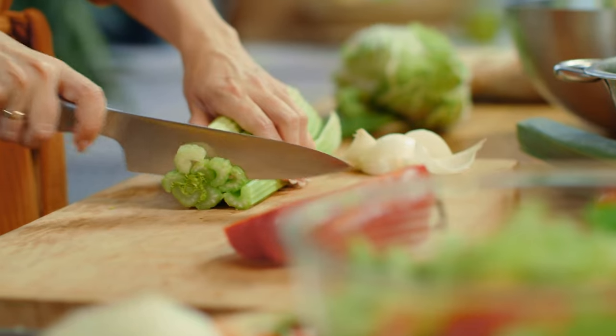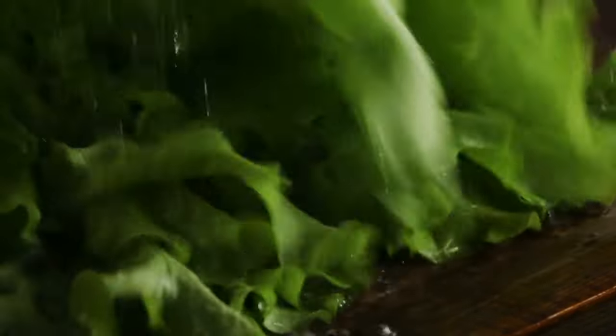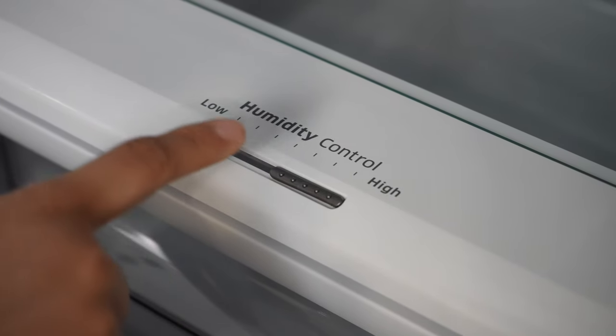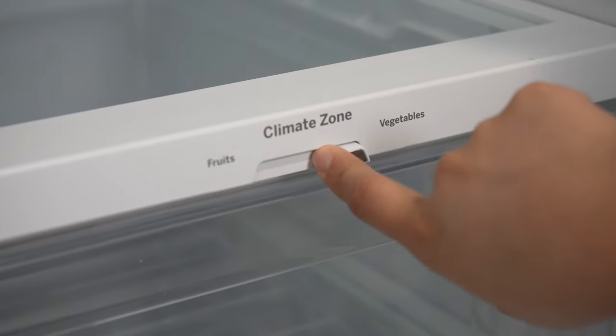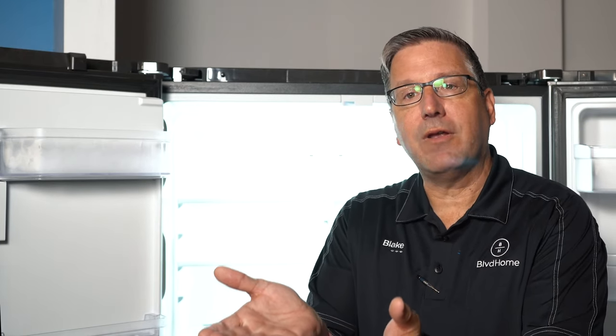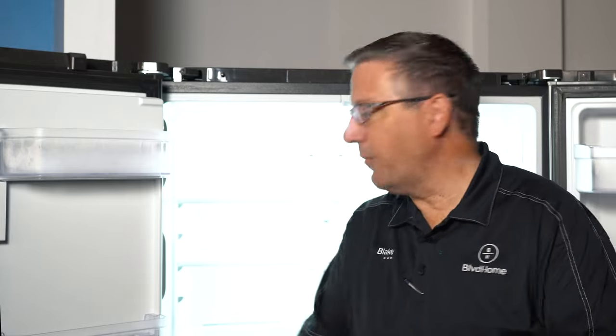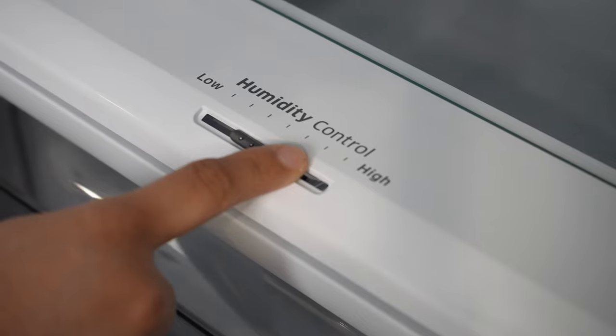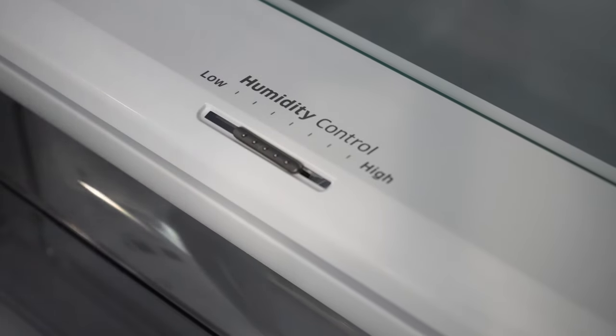Anything that's leafy — such as celery, lettuce, cabbage — you want high humidity, because we want to keep the moisture in there so it stays nice and firm. You want nice lettuce, not wilted lettuce. So make sure you have high humidity for those leafy items. You can always adjust based on what's in the drawer. If you have a combination of things, adjust your sliders for what is mostly in there, and that way it will keep your vegetables and fruits lasting longer.